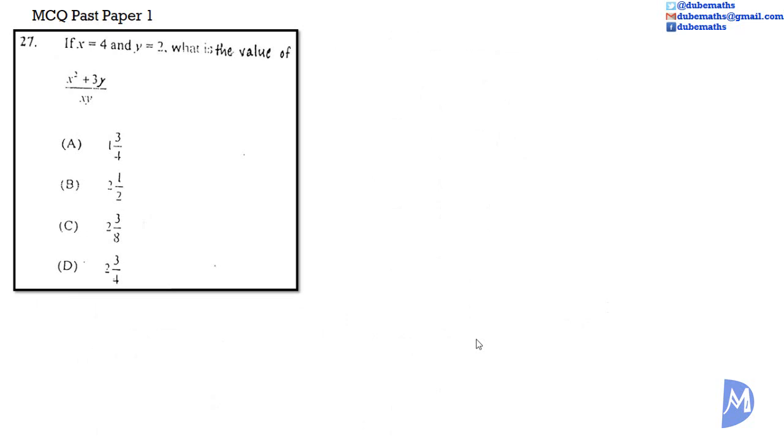Question 27. If X is equal to 4 and Y is equal to 2, what is the value of X squared plus 3Y over XY? Is it A, 1 and 3 quarter, is it B, 2 and a half, is it C, 2 and 3 eighths, or is it D, 2 and 3 quarters?